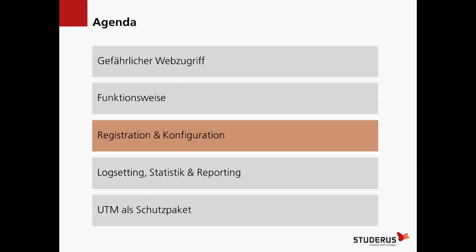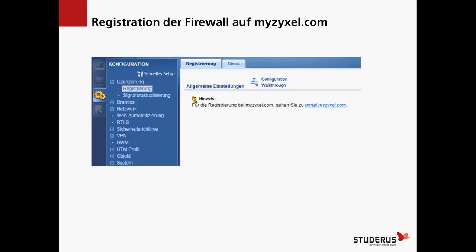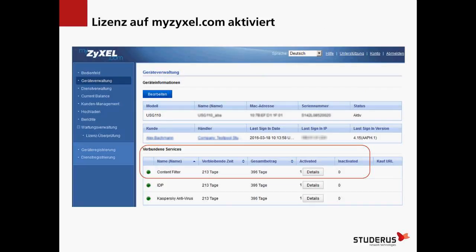Wie sieht das konkret auf dem Gerät aus, auf der Registrationsseite? Auf der USG gibt es im Registrationsbereich einen Link, wo man auf das Portal zugreifen kann – entweder einen neuen Account eröffnen oder sich auf dem bestehenden einwählen. Dann schaut man, dass der Dienst aktiviert ist, die Lizenz eingegeben ist, mit dem richtigen Gerät verbunden ist, und dass man sieht, er ist am Laufen und ist gültig.